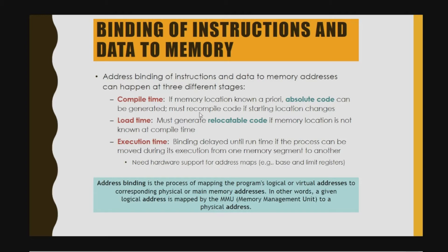The first stage is compile time: if the memory location is known a priori, absolute code can be generated; the code must be recompiled if the starting location changes. The second stage is load time: relocatable code must be generated if the memory location is not known at compile time. The third stage is execution time: binding is delayed until runtime if the process can be moved during execution from one memory segment to another.